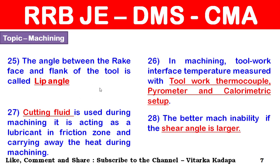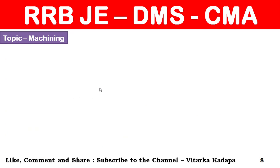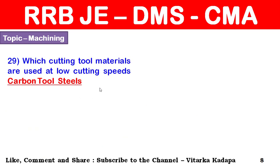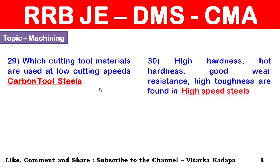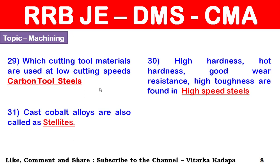Better machinability takes place if the shear angle is larger. Cutting tools used at low cutting speeds are carbon tool steels. High speed steels have high hardness, hot hardness, good wear resistance, and high toughness.